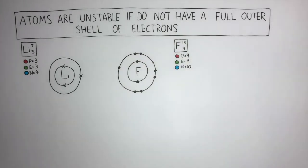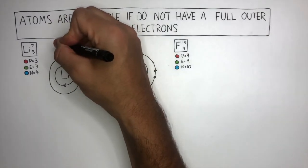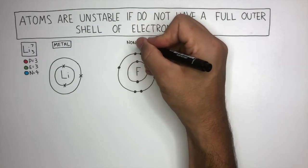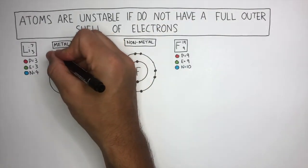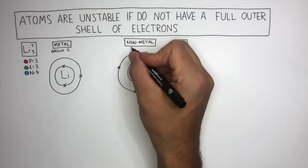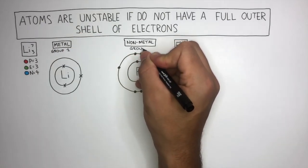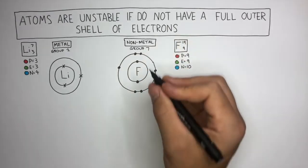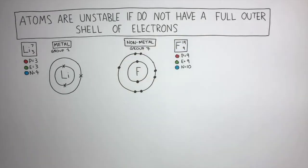This is a dot and cross diagram to show the different electrons from the different atoms. Lithium is a metal, whereas fluorine is a non-metal. Lithium is in group 1, so will have 1 electron in its outer shell, whereas fluorine is in group 7, so has 7 electrons in its outer shell. Both atoms are unstable because neither has a full outer shell of electrons.